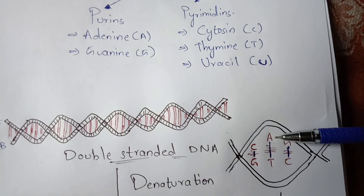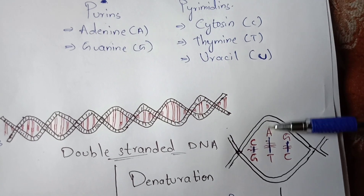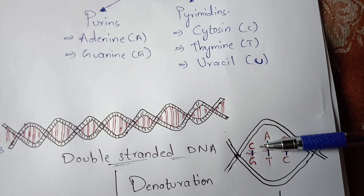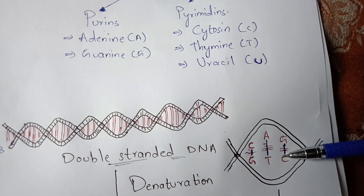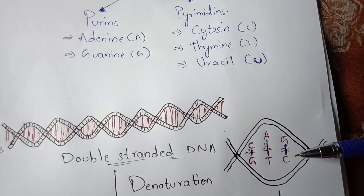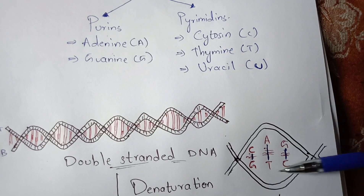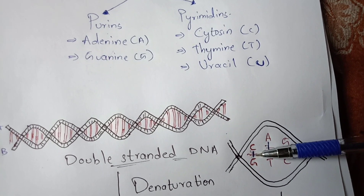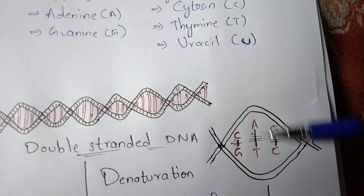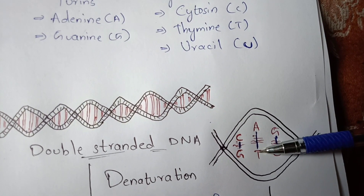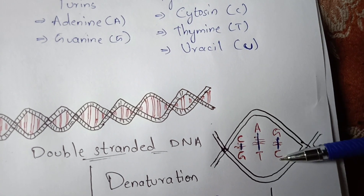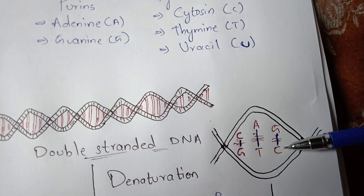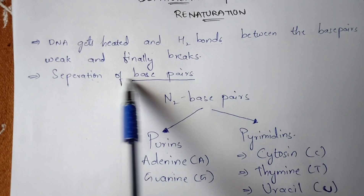This is the zoom diagram of denaturation. If you consider strand A and strand B, between these two strands there is a presence of nitrogenous base pairs — nucleotides such as C, G, A, T. Cytosine (C) pairs with guanine (G) and adenine (A) pairs with thymine (T), with hydrogen bonds drawn between each nucleotide base pair.